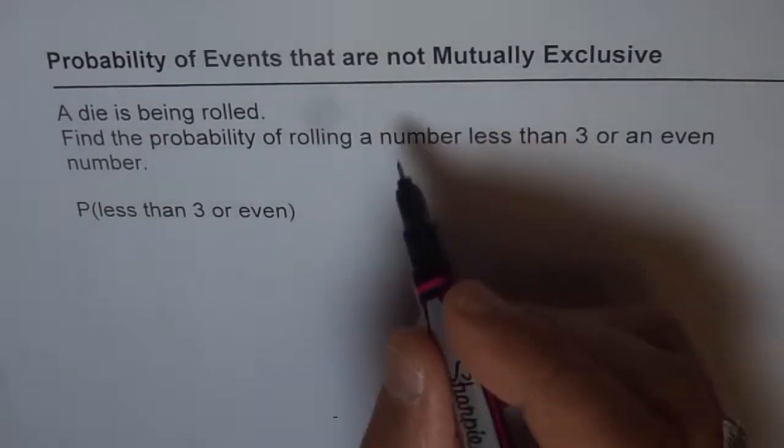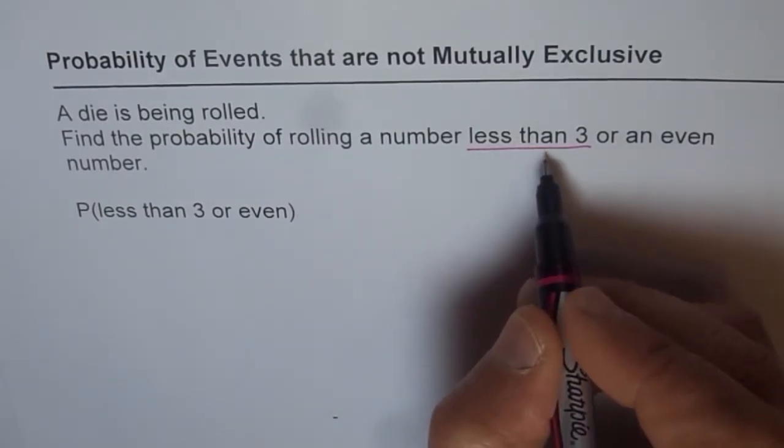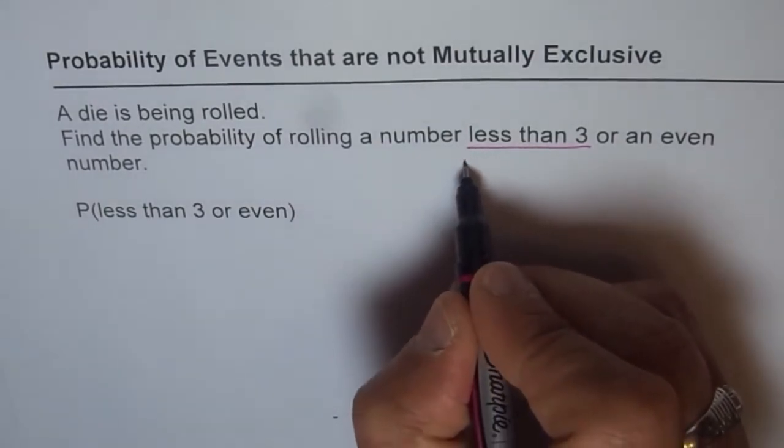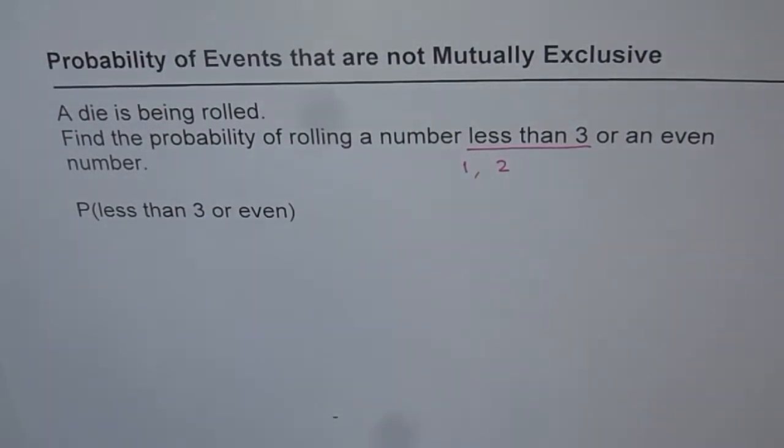When we say rolling a number less than 3, it means what? It means that the numbers could be 1 or 2. So these two numbers are less than 3.